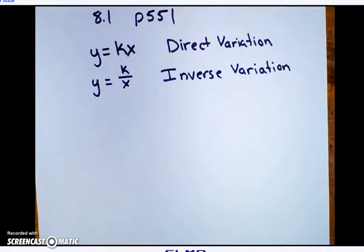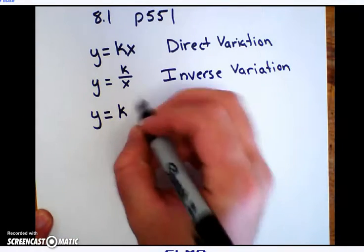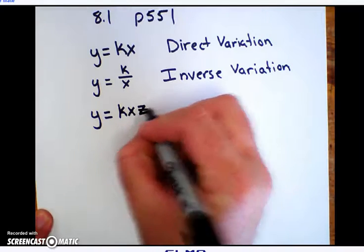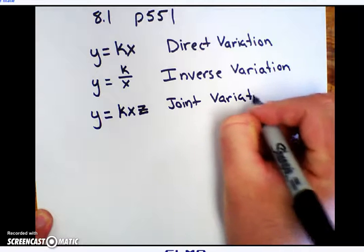And then the last one you definitely didn't see in Algebra 1. This is y equals k times x times z. This is what's called joint variation. Get those three written down. We'll talk about it.